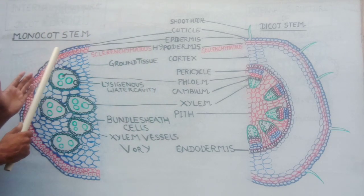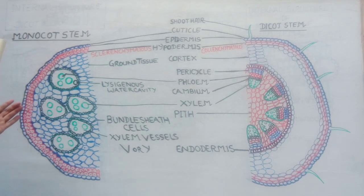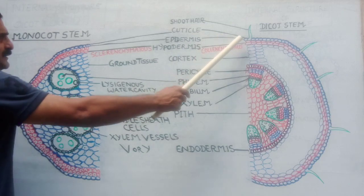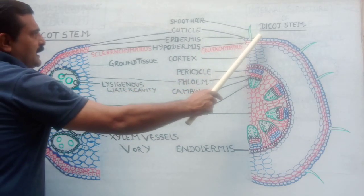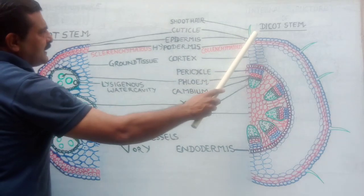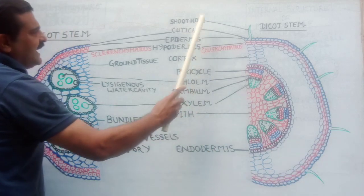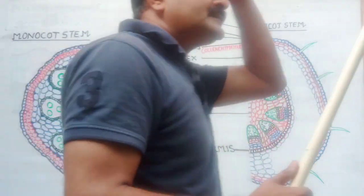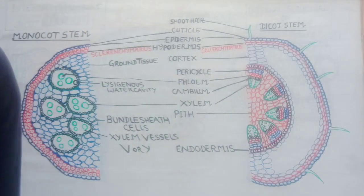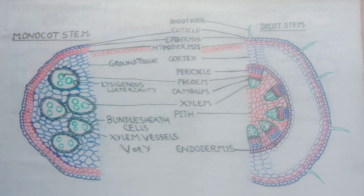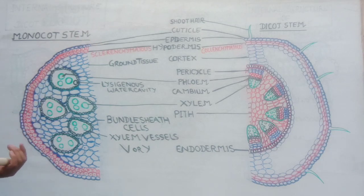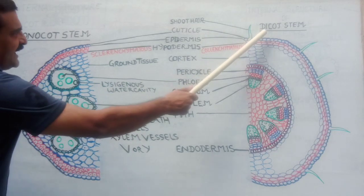The epidermal cells of monocot are small in size and there are no soot hairs. But in case of the outermost epidermis of dicot stem, the epidermal cells are somewhat larger than those of monocot, and some epidermal cells develop into soot hairs or trichomes. These trichomes help to prevent water loss due to transpiration — prevention of water loss is an important function of trichomes in dicot stem.